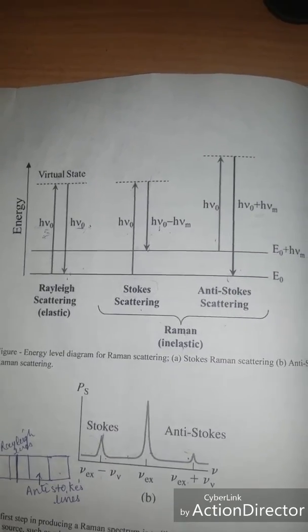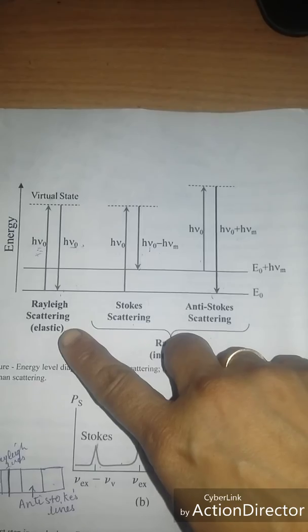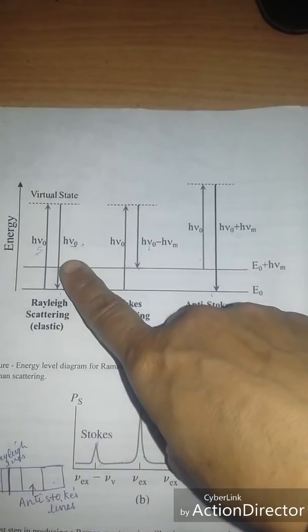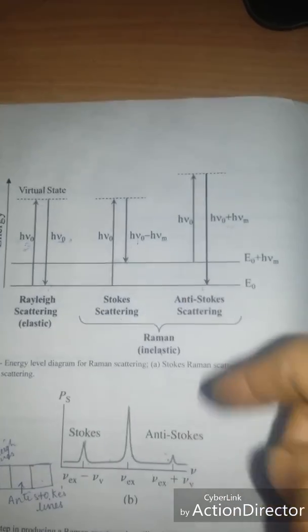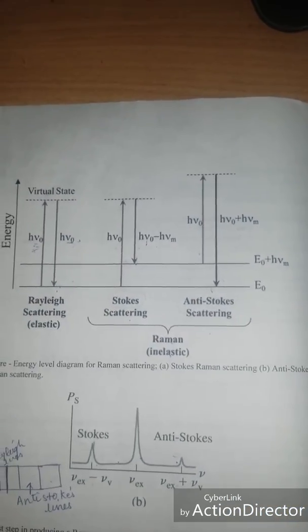This is the figure which is showing the comparative scattering: this is the Rayleigh scattering, this one is the Stokes, and this one is the anti-Stokes.